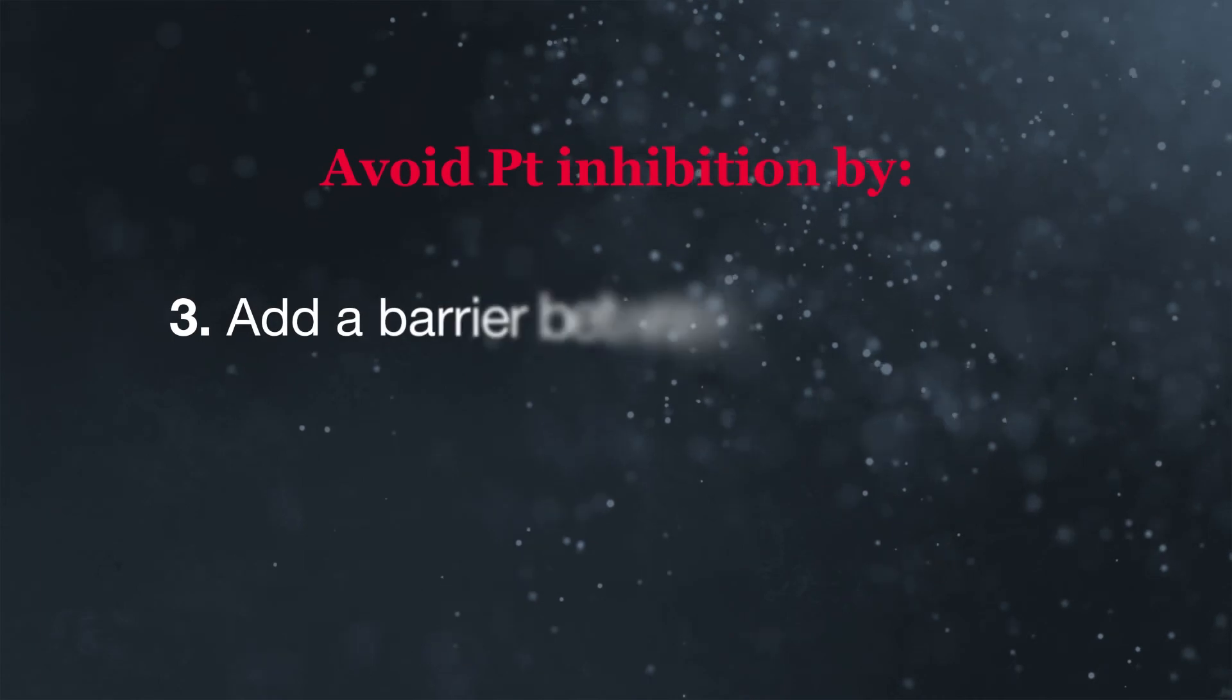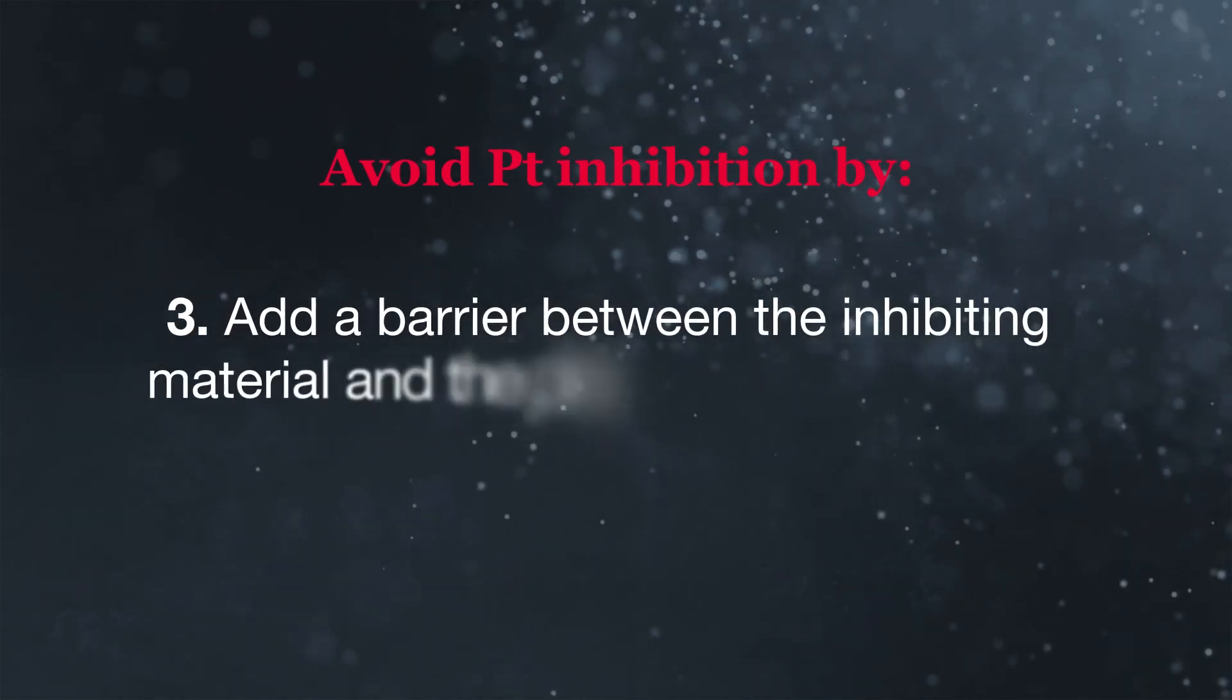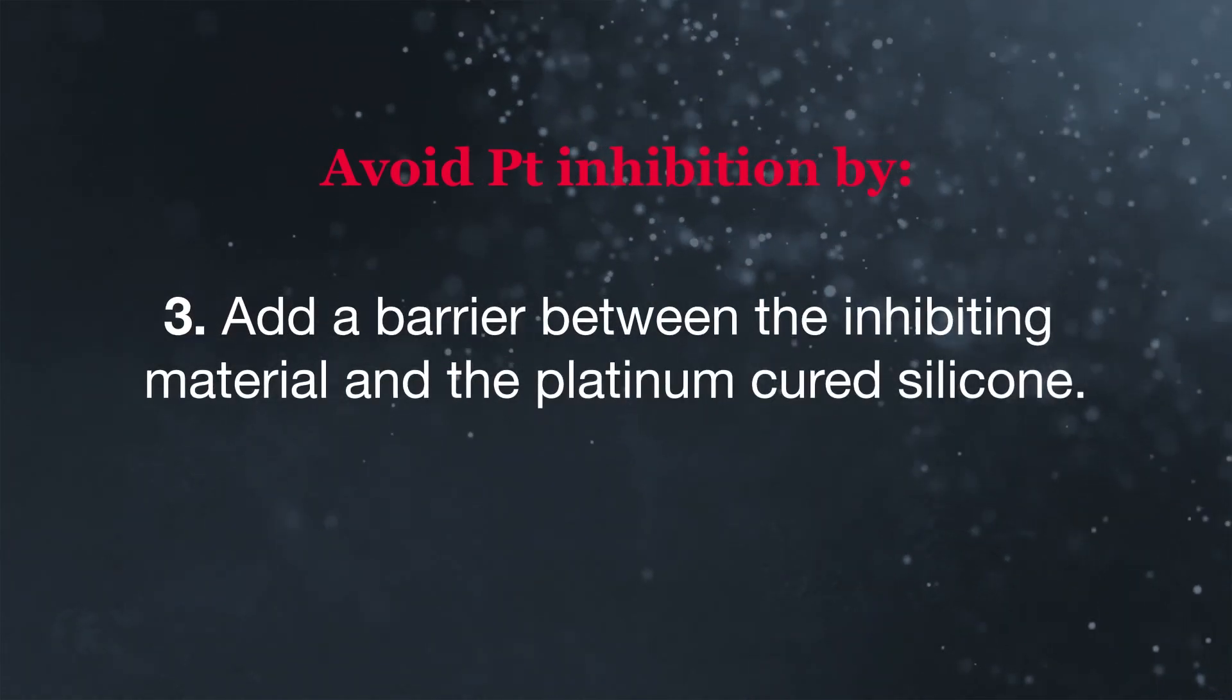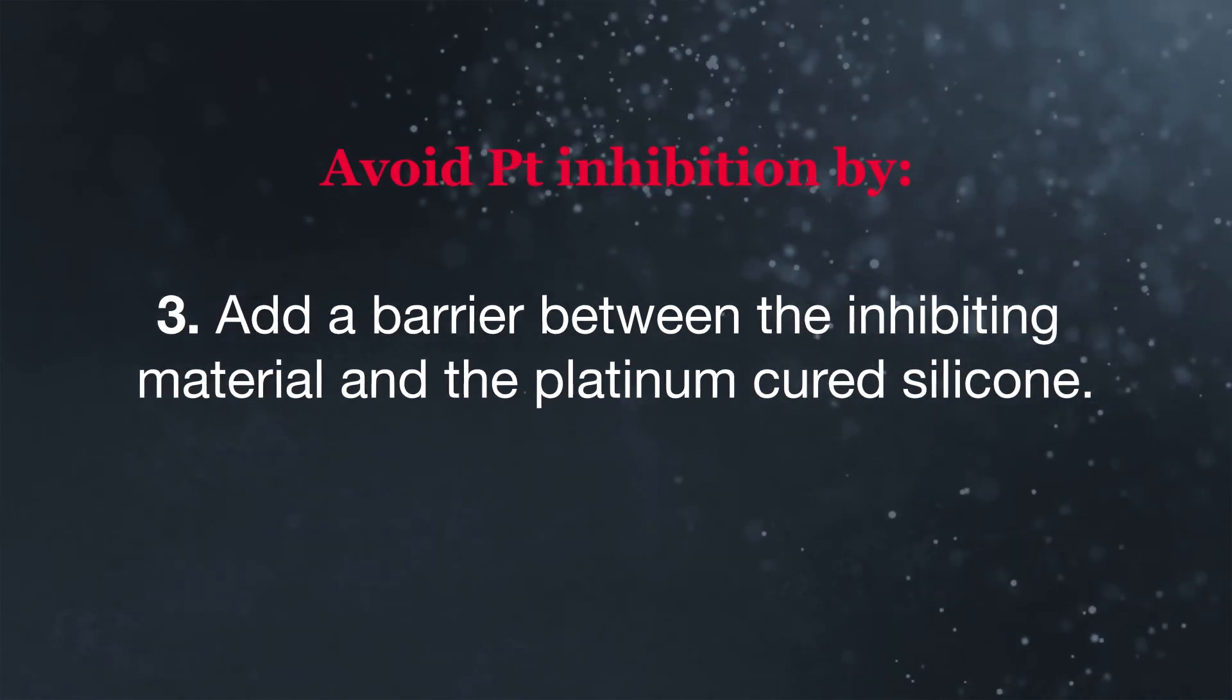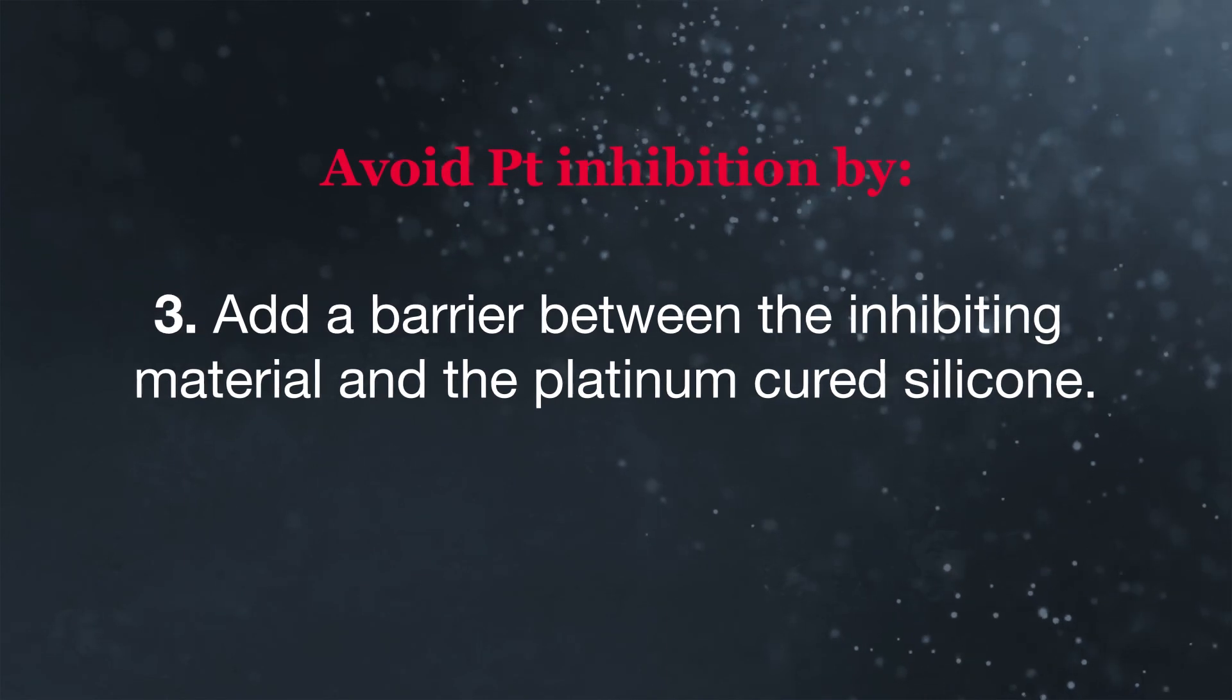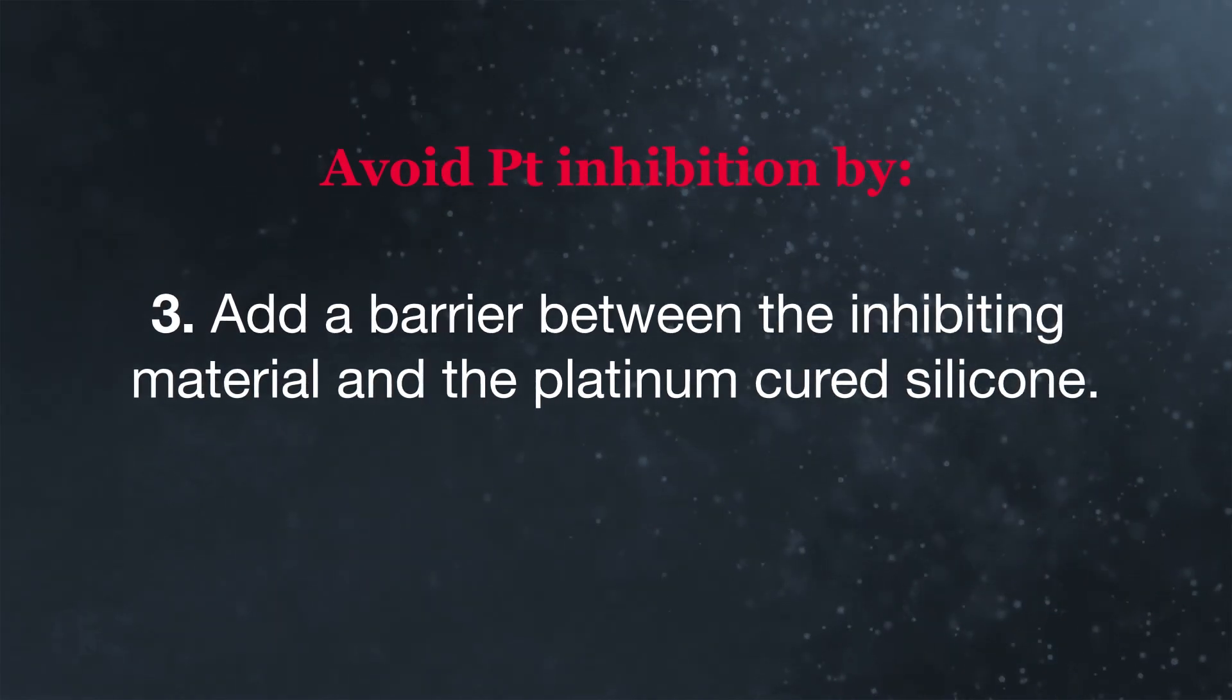3. Adding a barrier between the inhibiting material and the platinum cure silicone, such as a primer with extra catalyst, or a small amount of another chemistry to act as a buffer, especially when the inhibiting surface is an integral part of the assembly.